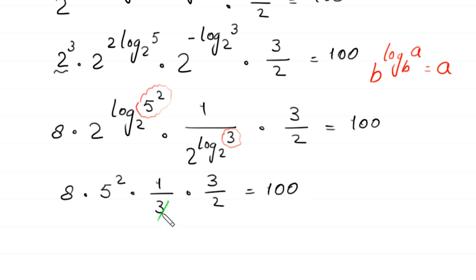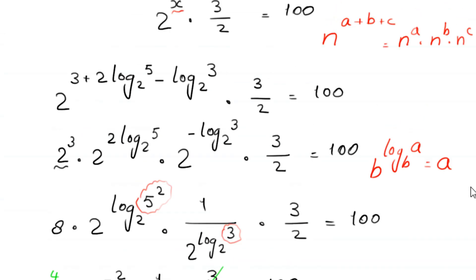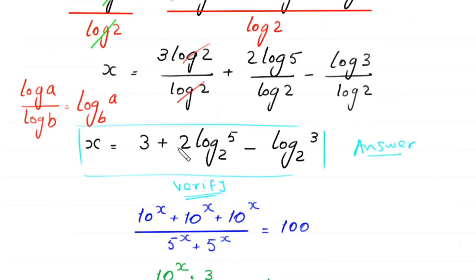Now, the 3 cancels with the 3, and 2 divides into 8 to give 4. So we are left with 4 times 5 squared, which is 4 times 25, equal to 100. And 4 times 25 is indeed 100. You can see that the left-hand side equals the right-hand side. It is proved that the value x equals 3 plus 2 times log base 2 of 5, minus log base 2 of 3, is a valid solution.